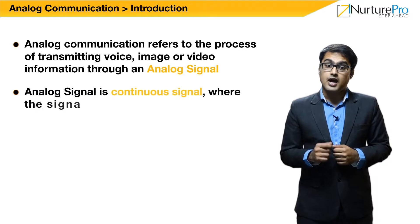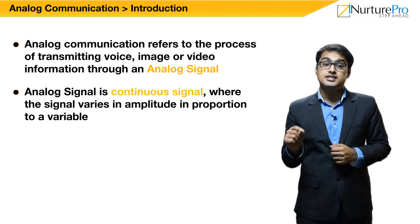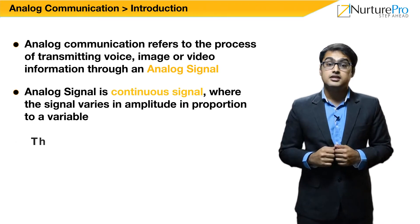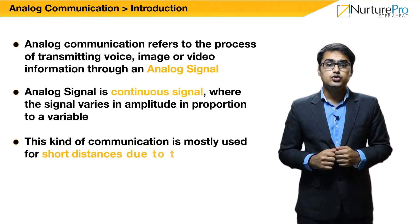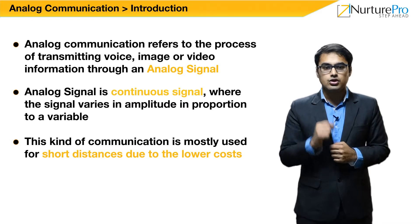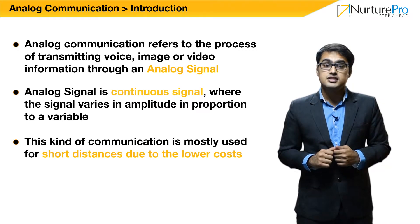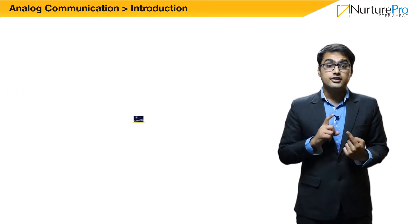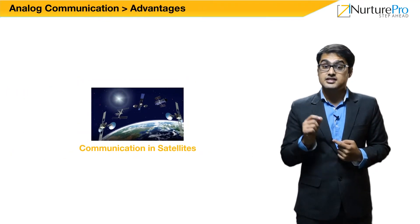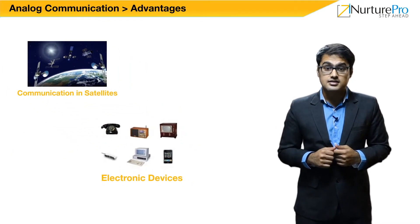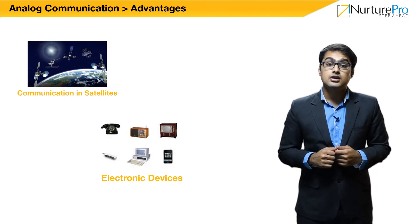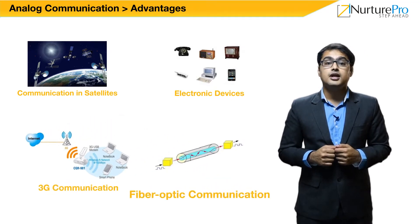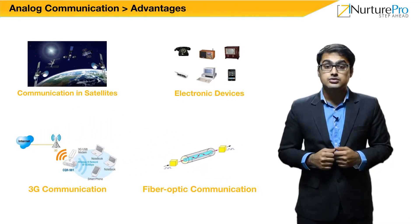In analog communication, analog signals are used. An analog signal is a continuous signal where the signal varies in amplitude in proportion to the variable. This kind of communication is mostly used for short distances due to lower cost. It is used in small systems where multiplex digital transmission is not needed. Analog communication is used in communication satellites and electronic devices like telephone, television, radio, and computer, in 3G communication, and also in fiber optic communication.